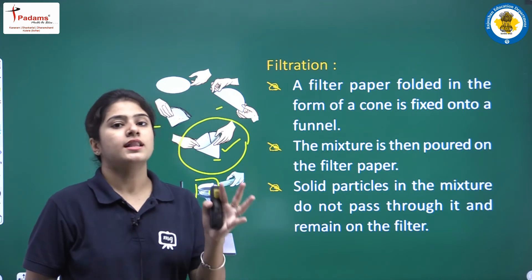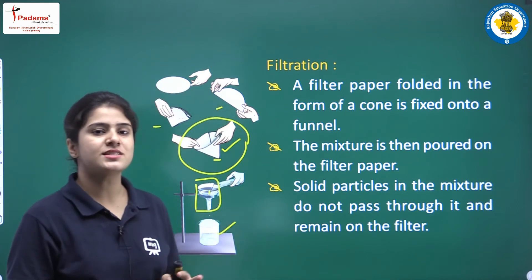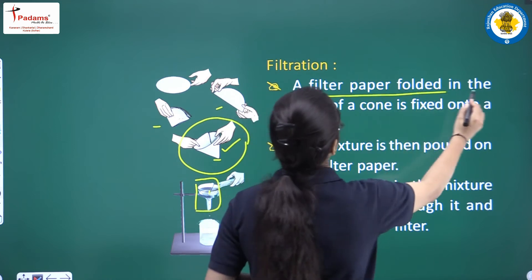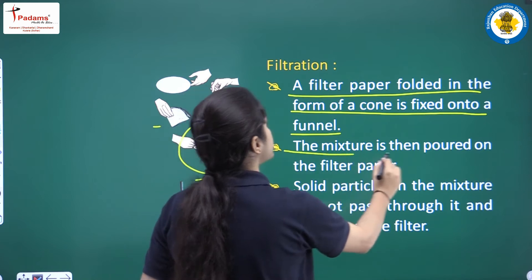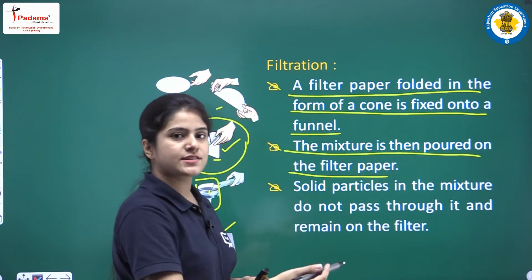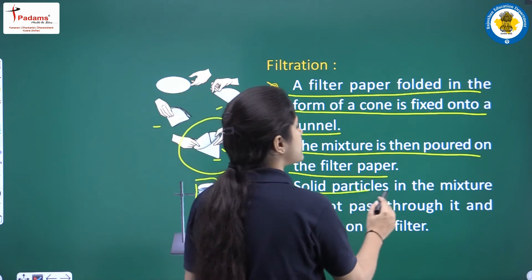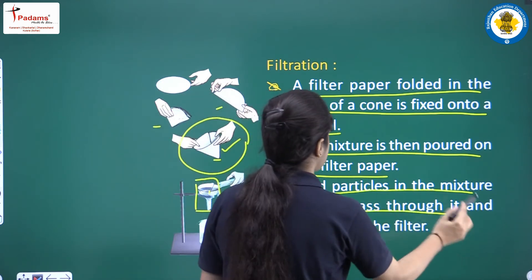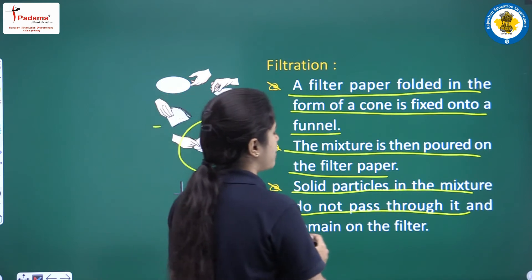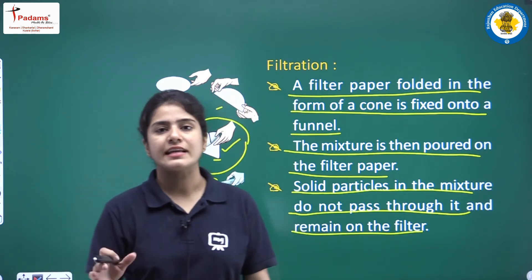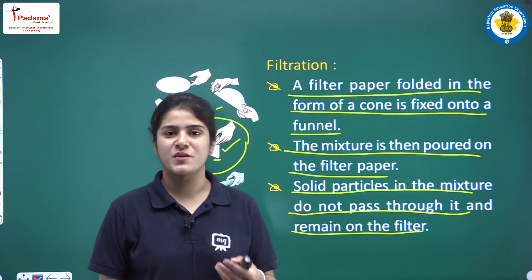A filter paper folded in the form of a cone is fixed onto the funnel. The mixture is then poured onto the filter paper. The solid particles in the mixture do not pass through it and remain stuck on the filter paper, while the clean water comes through into the beaker. The method of separation with the help of filter paper is called filtration.